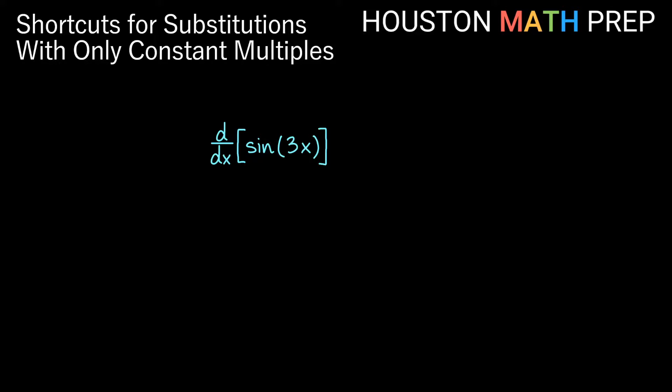So imagine if you were doing the derivative of this thing here, sine of 3x. The only thing being done to x inside of this sine operation that requires the chain rule is actually this constant multiple of 3.